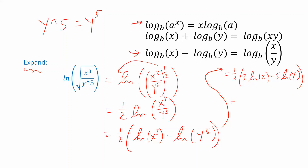One more thing: distribute the coefficient of one-half to the two terms inside parentheses, giving us three-halves times natural log of x minus five-halves times natural log of y.